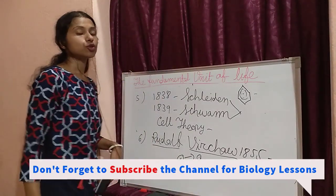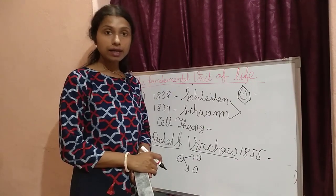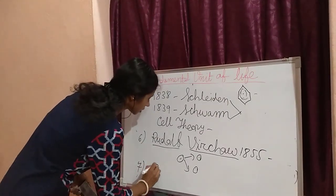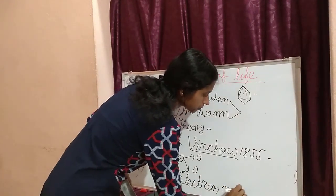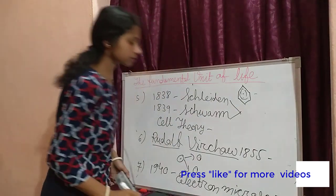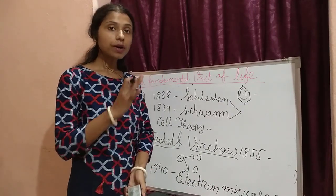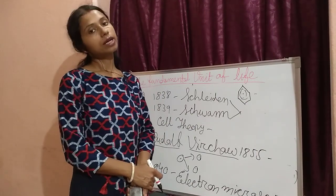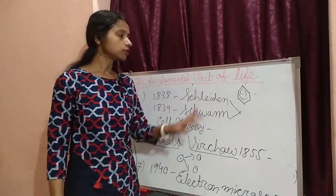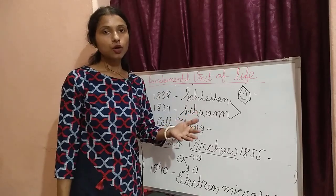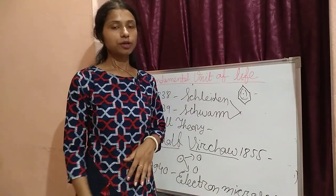Microscope is a very important part for developing and identifying and analyzing cells. At last, in the year 1940 we got the electron microscope. By discovering this electron microscope we got the idea about the proper cell — about the structure of the cell, about the organelles of the cell, how a cell develops and how it divides. So today up to this is the discovery part. Next day we will discuss about the shapes and sizes of cells and different kinds of cells. Thank you.